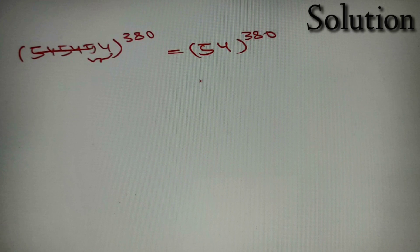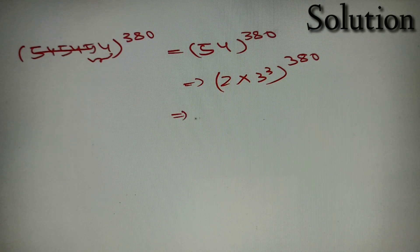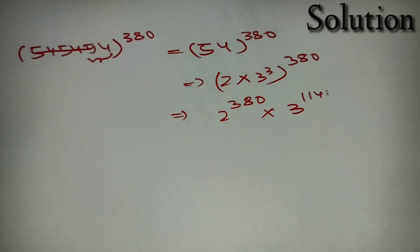Now 54 can be further simplified as 2 into 27, and 27 can be written as 3³. So we have 2 raised to the power 380 into 3 raised to the power 380 into 3 raised to the power 380, which is equal to 3 raised to power 1140.